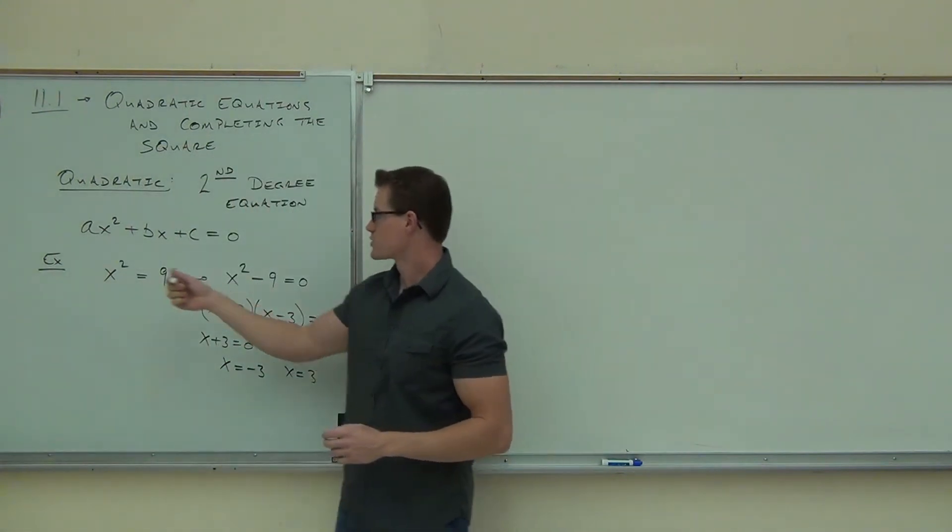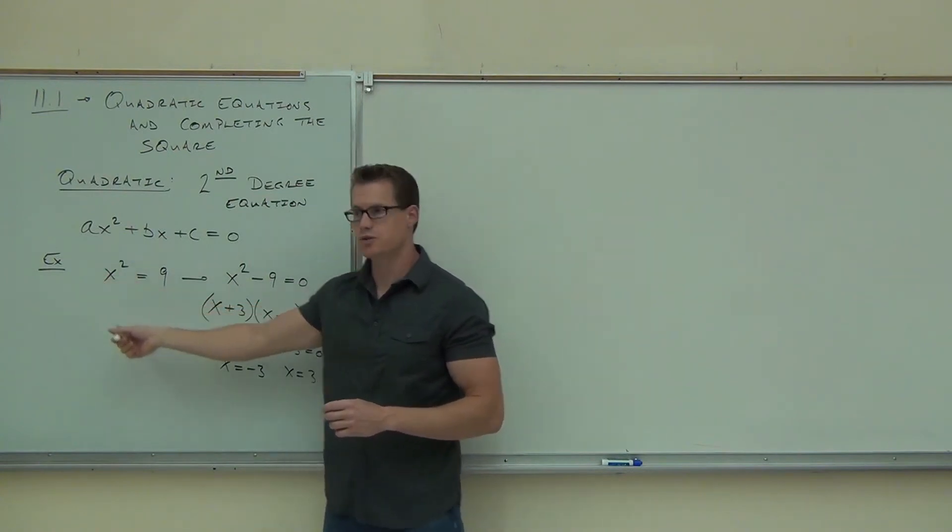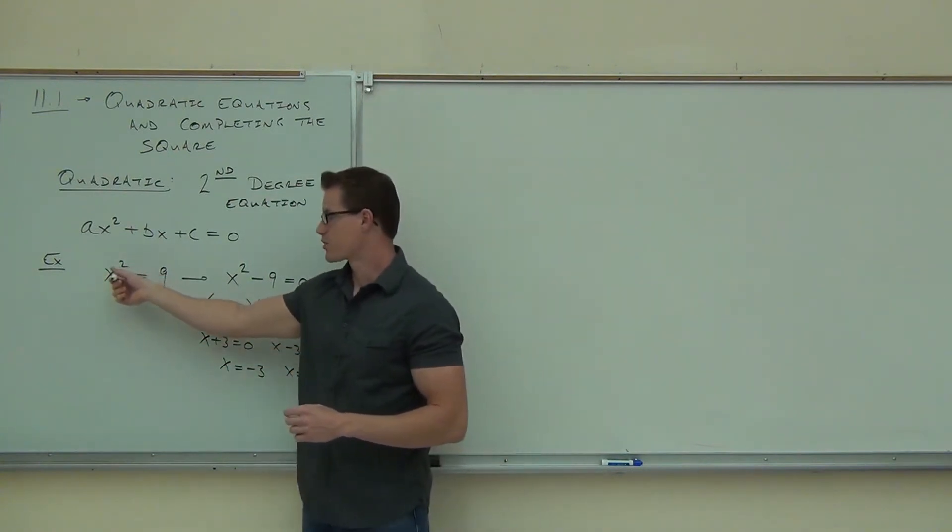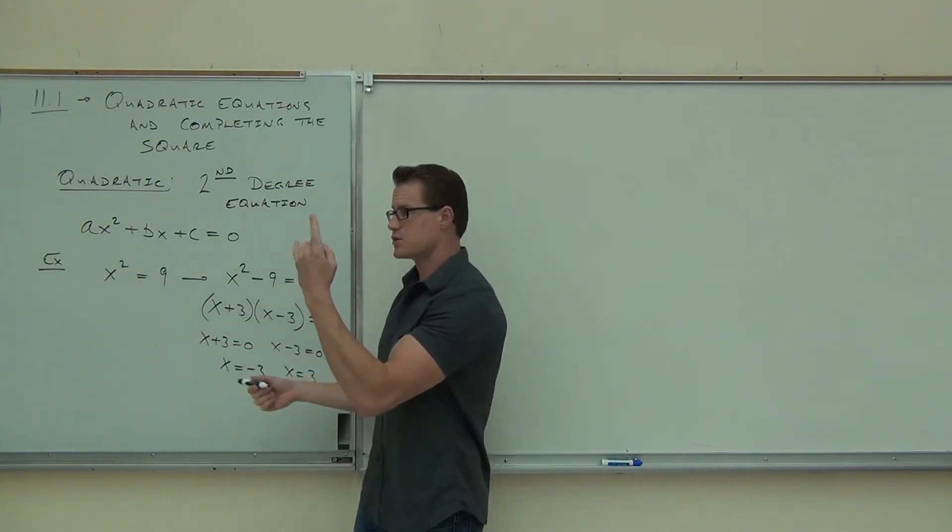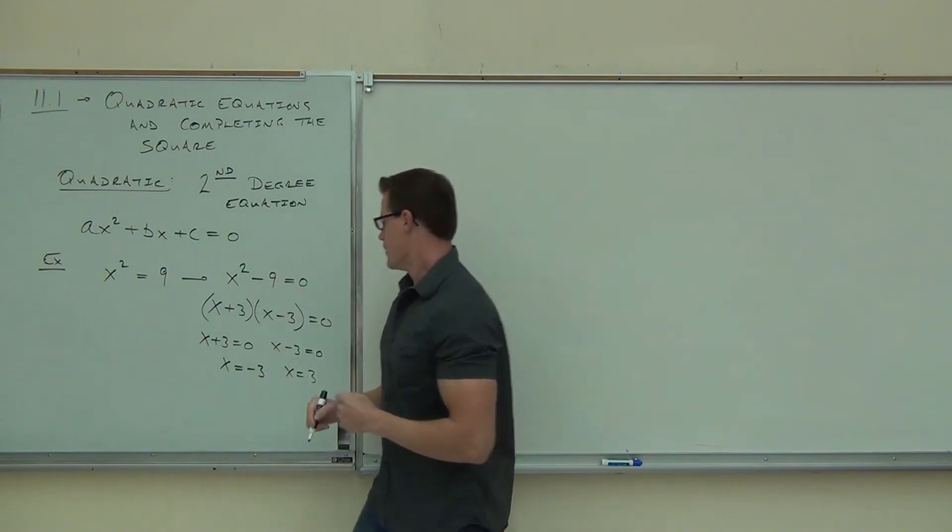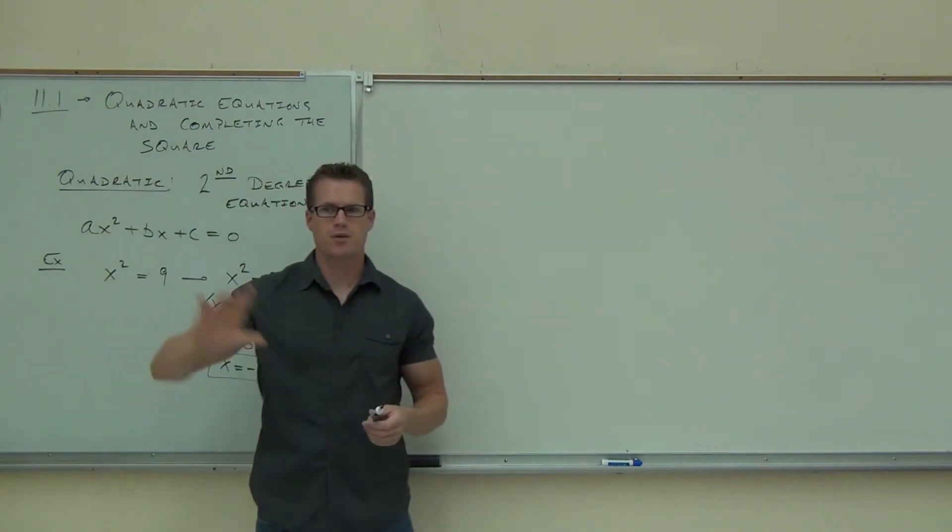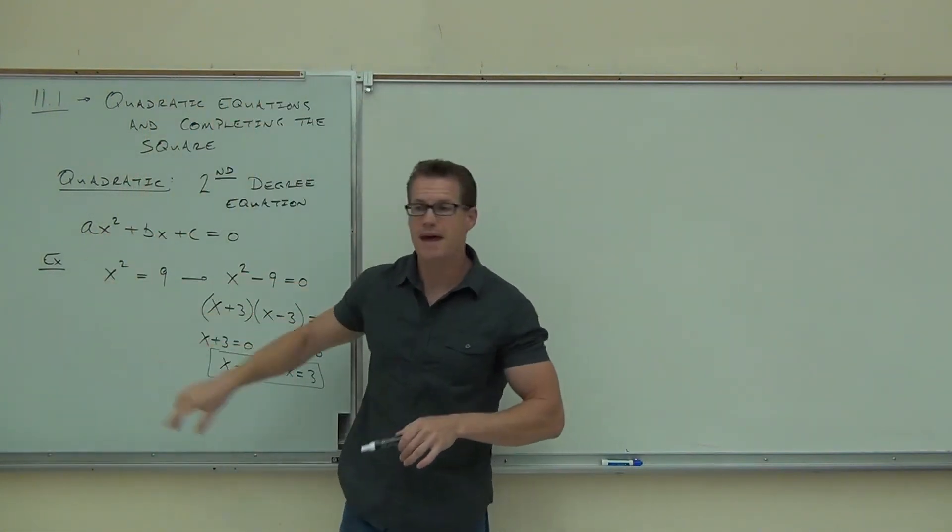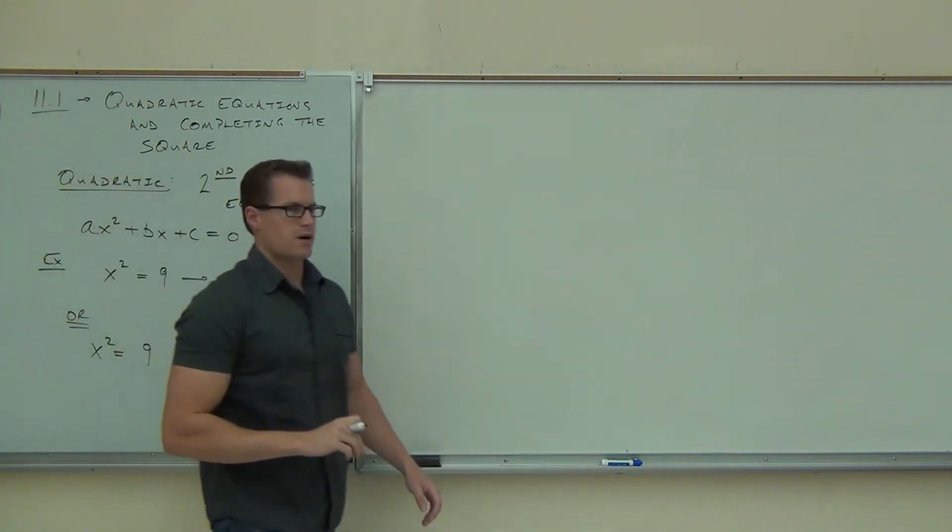How many solutions did we get? Two. What was our largest power in our equation? Two. That is not a coincidence. The largest power in your equation dictates how many solutions you're going to get. If that was a power of 3, you'd be getting 3 solutions. Power of 4, you'd be getting 4 solutions. If this is a power of 2, you're going to be getting 2 solutions all the time. In our case, that's 3 and negative 3. How many people feel okay with the old way? Okay, that's old. We've done that. Now, we're going to look at a different way to look at this.